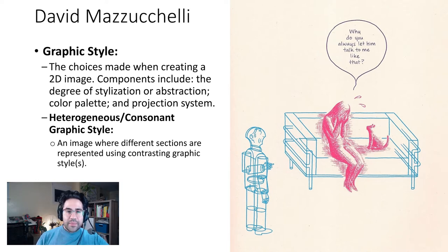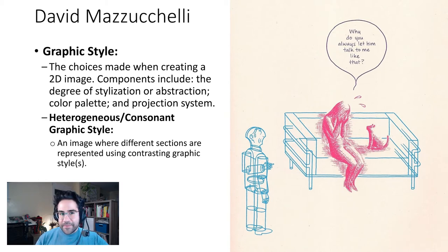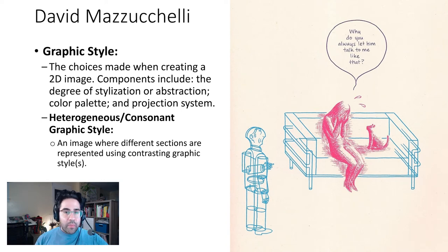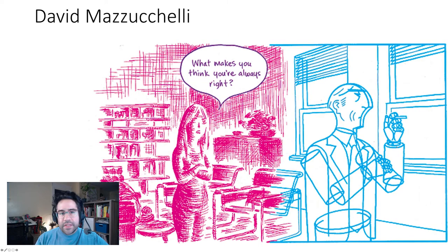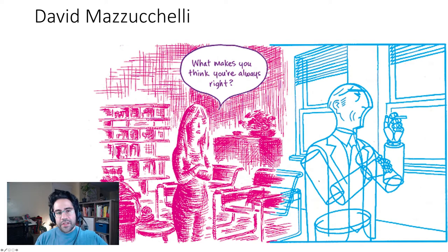Here we have an example from David Mazzuccelli of a heterogeneous or consonant graphic style, and this is an image where different sections are represented using contrasting graphic styles. So within an image you might find one or more different graphic styles. You can see a larger example of that here, where one figure is rendered in a very geometric, clean-lined way, and the other figure is represented with cross hatches in a different color. So those two graphic styles help to push different concepts in these images.